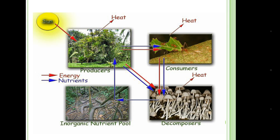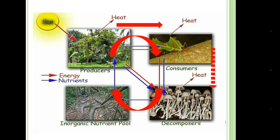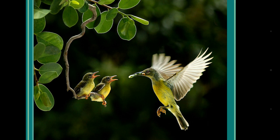Finally, we can say that nutrition flow is cyclic while energy flow is unidirectional or linear. That's all for today. Thank you.